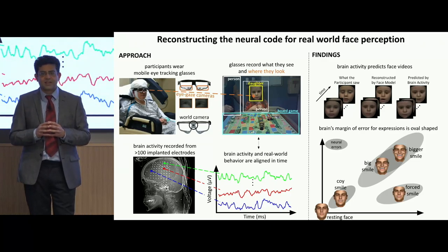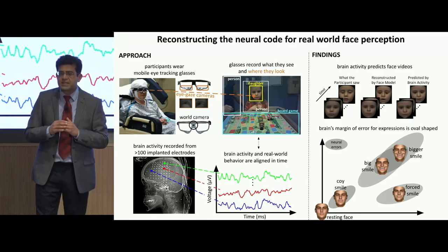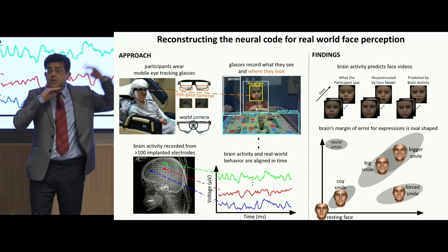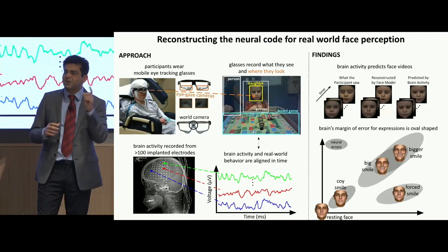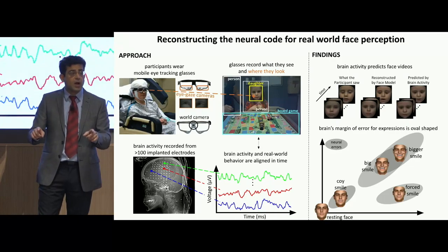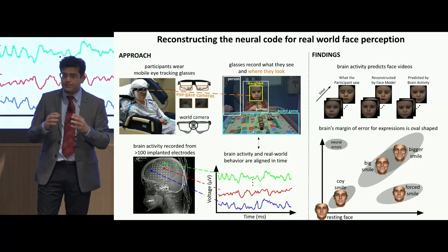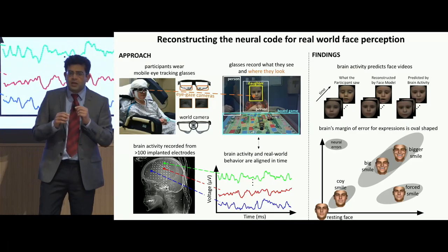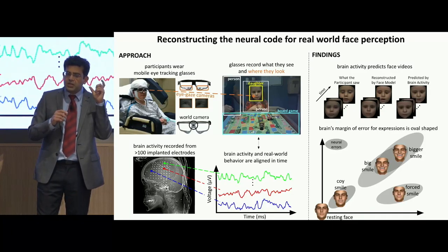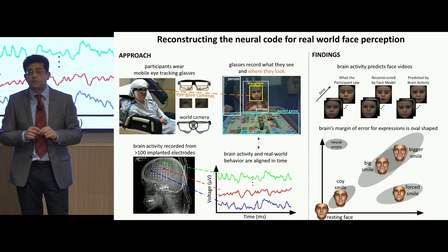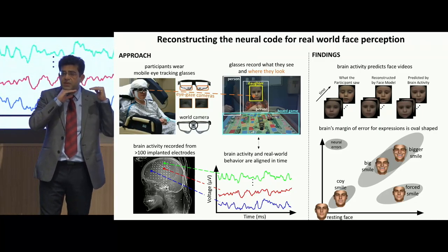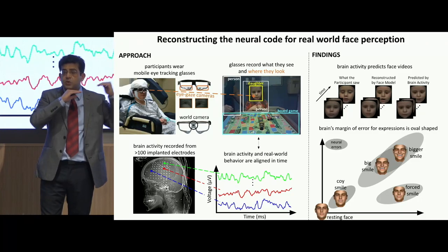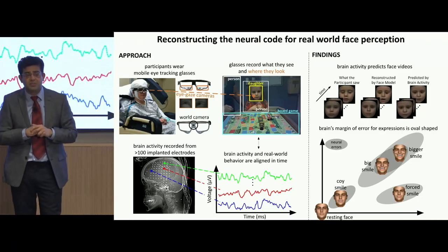So, what is it? We found that your brain codes your daughter's expressions as deviations from her resting face. Bigger deviations mean more intense expressions. You're more sensitive to the difference between her forced smile and a relaxed smile than you are to how big the smile is. The difference between the margin of error between intensity and type of expression is different, which means your brain's code for facial expressions is oval-shaped. There's even more nuance: you're more sensitive to the difference between a quiet smile and a resting expression than to the same difference between a big smile and an even bigger smile.